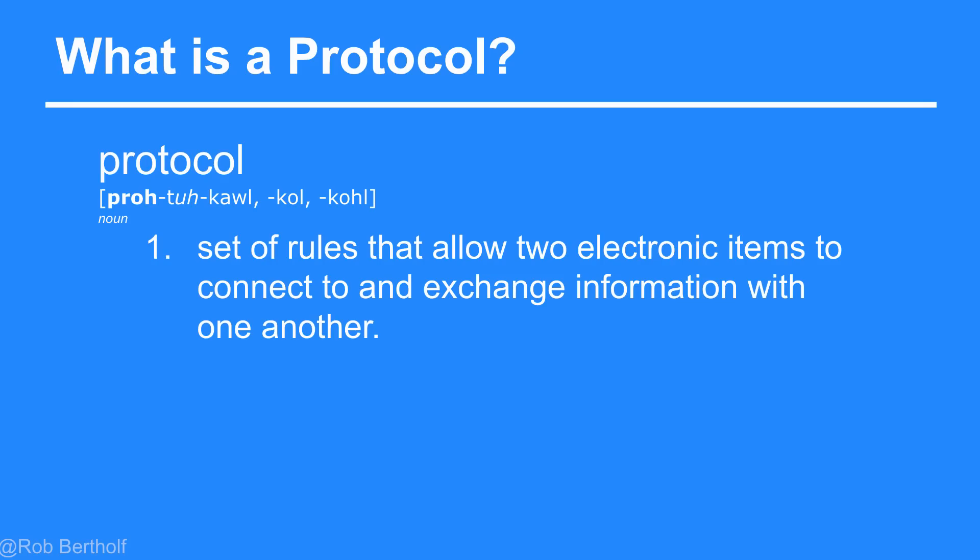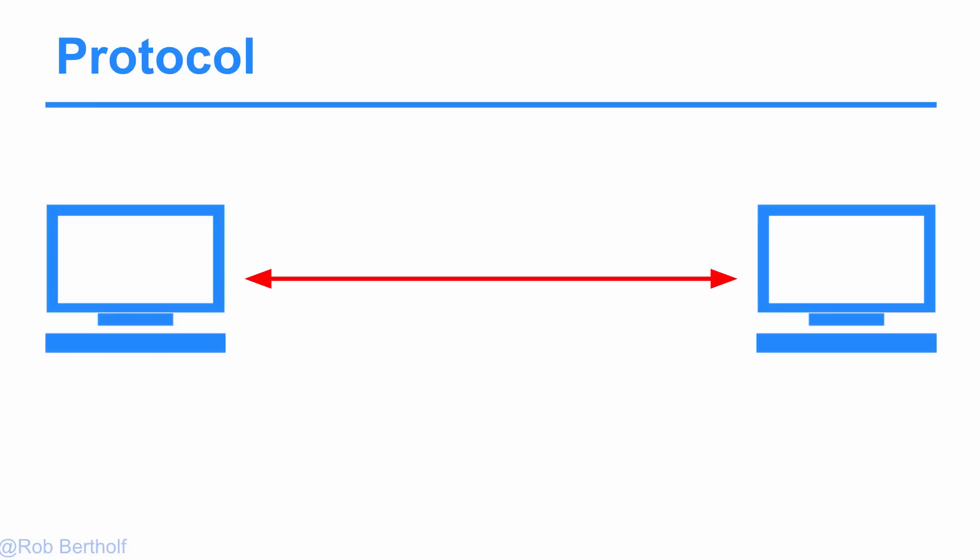So let's get started by discussing protocols. Simply put, a protocol allows exchange of information between electronic items. In computing terms, it's just a set of rules that lets computers communicate with each other. A protocol says what part of the conversation comes at what time, and it also says how to end the communication.